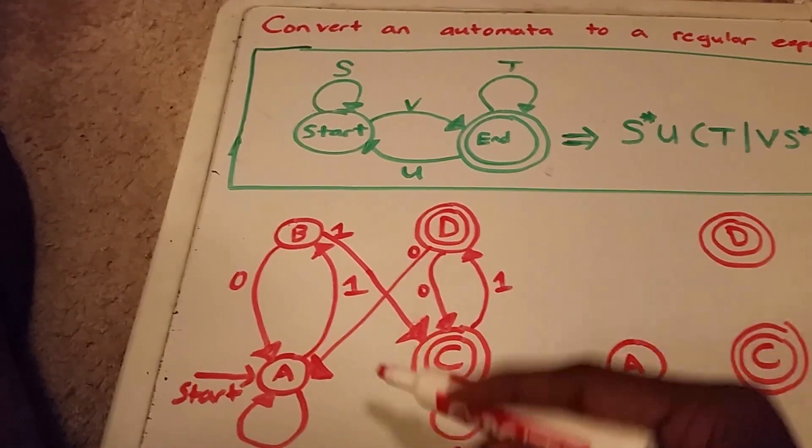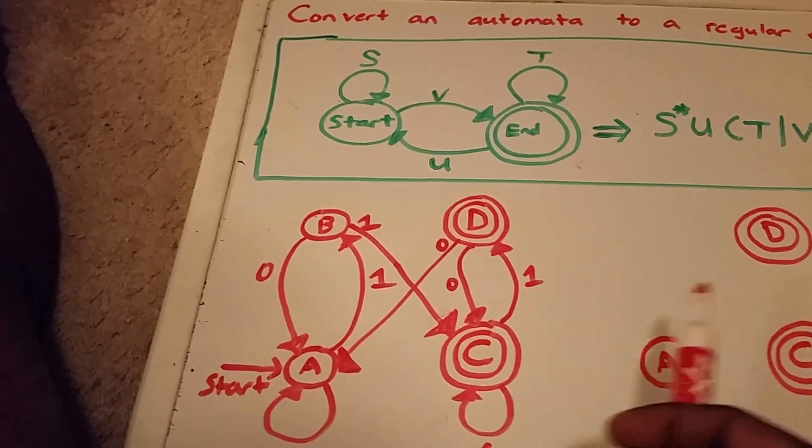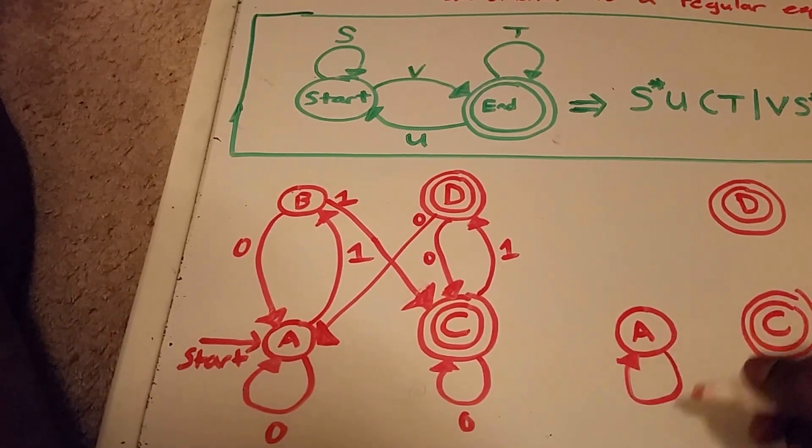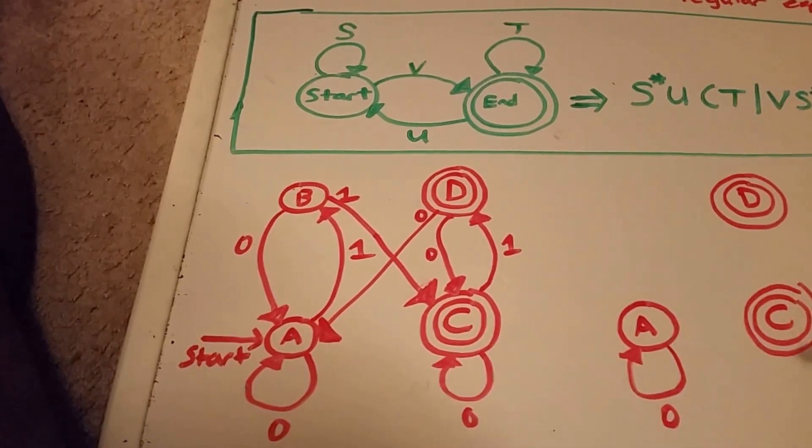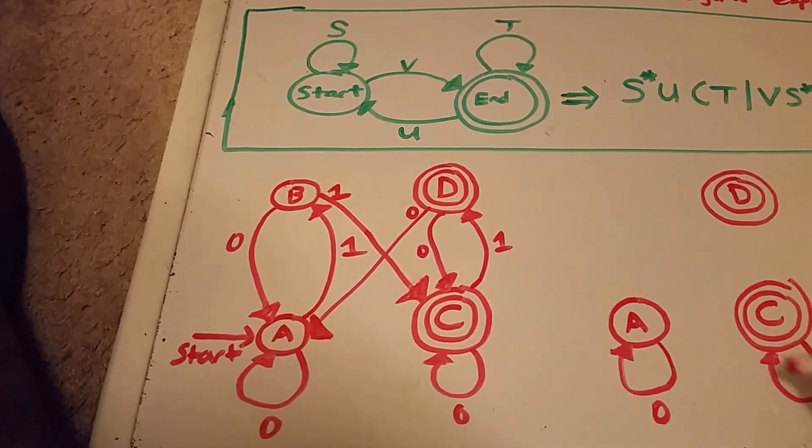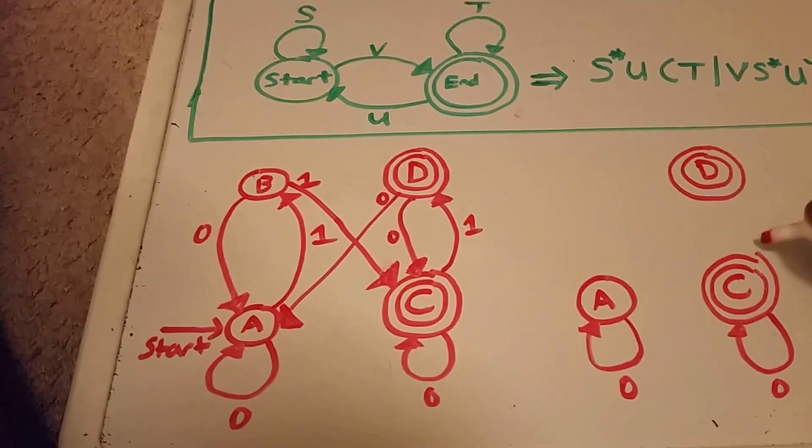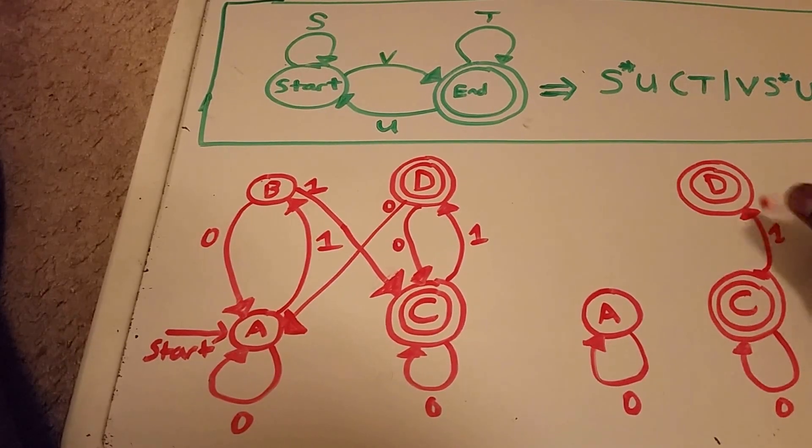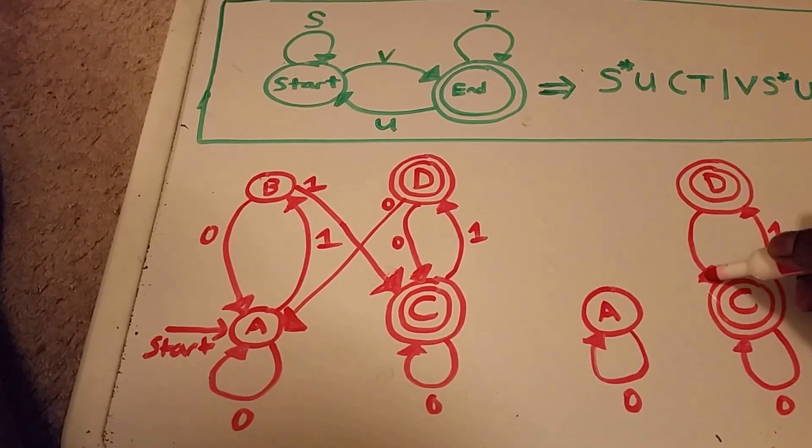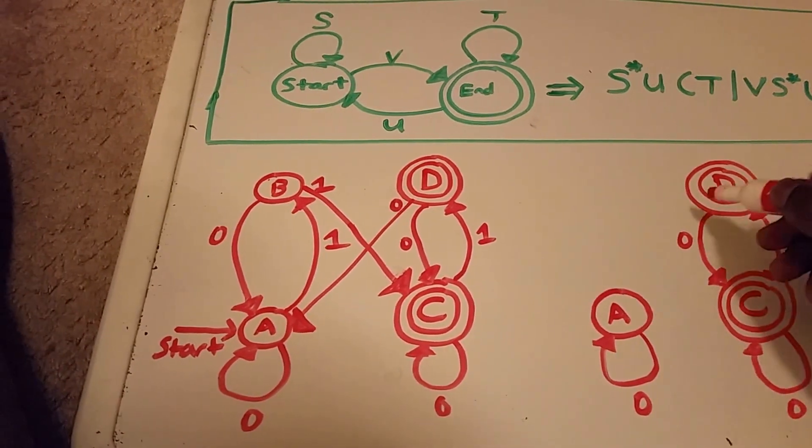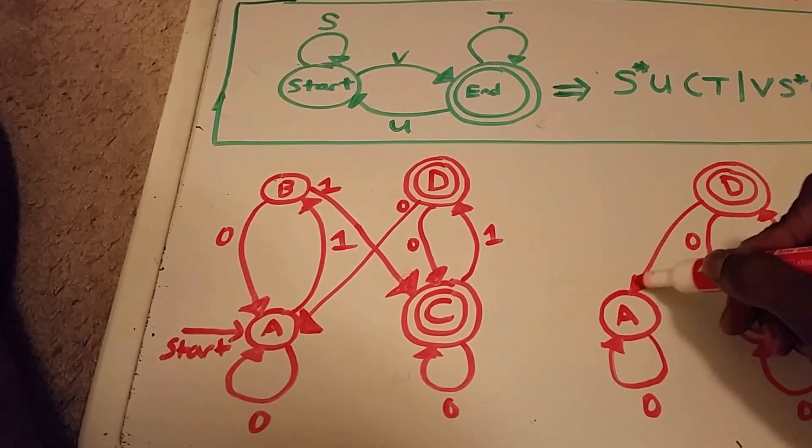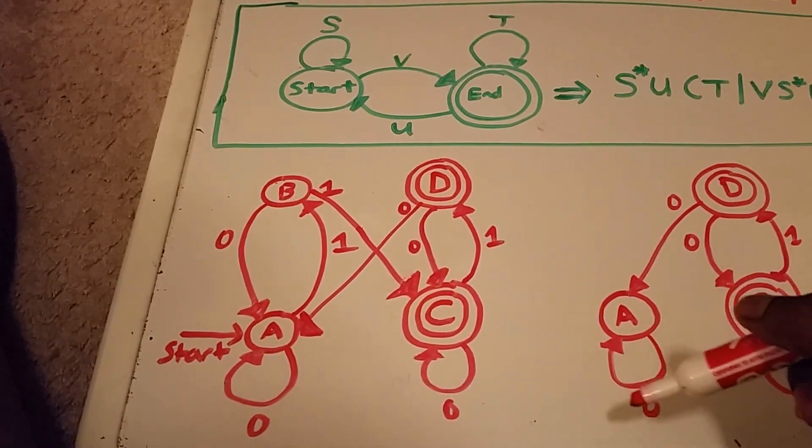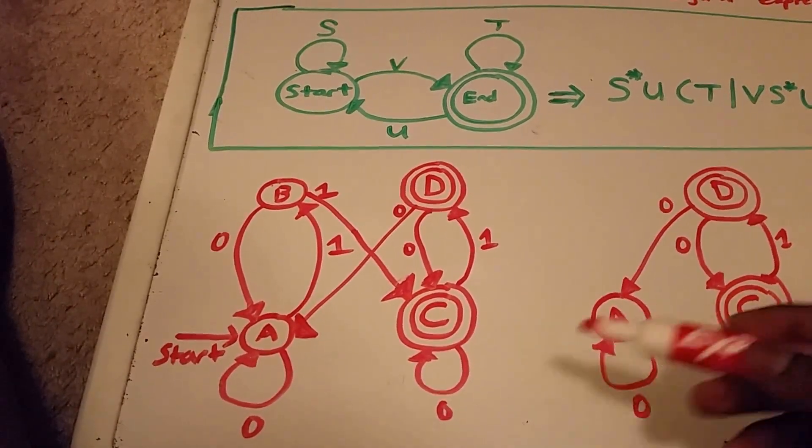And now I want to connect these paths together that don't go through B. So we have A going to A with input of zero. And C going to C with input of zero. And then we have C going to D with input of one. And from state D to C, we have zero. And then from state D to A, we have a zero from over there.